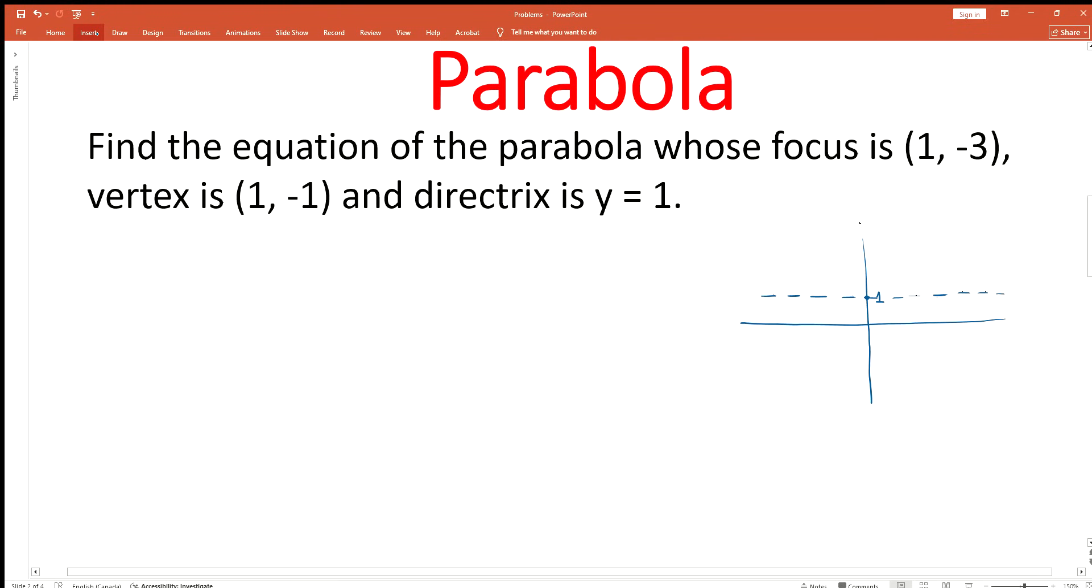Next, we can plot the given vertex of the parabola. The vertex is at (1,-1). So this is the vertex of the parabola. This means the parabola opens in the downward direction because the parabola cannot cross the directrix. So we can sketch the parabola like this.